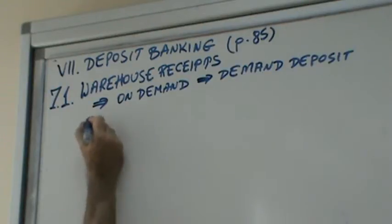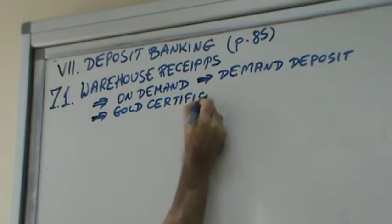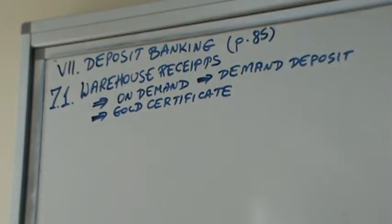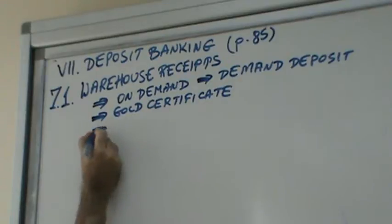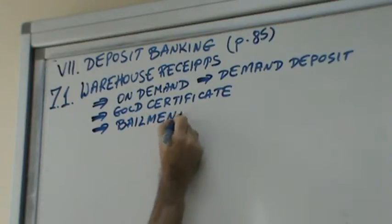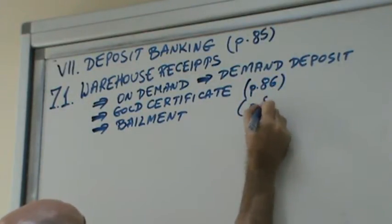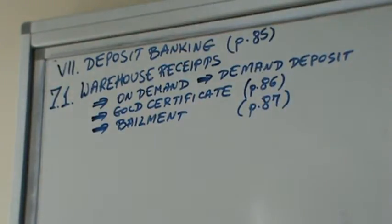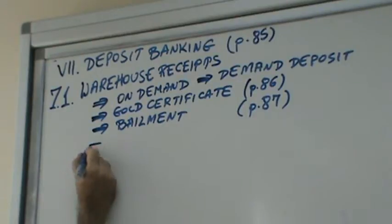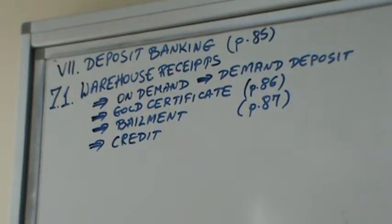You could also have a gold certificate where you actually deposited gold. We said that this demand deposit is legally called bailment. The gold certificate is on page 86, and bailment is on page 87. We said there is a difference between bailment and credit: in a credit there is borrowing, there is lending, there is an exchange between a present good and a future good.